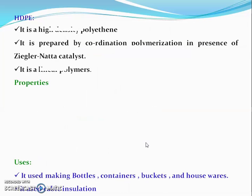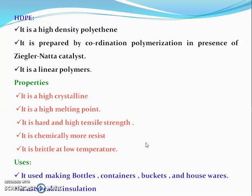Now we have seen high density polyethylene. High density polyethylene is prepared by coordination polymerization in the presence of Ziegler-Natta catalyst. It is a linear polymer.